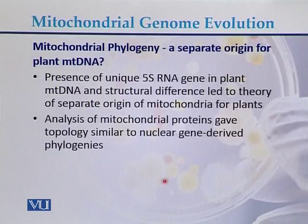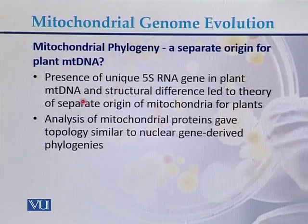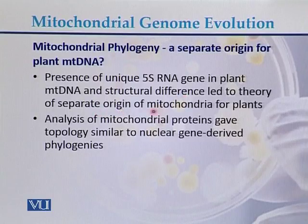Regarding mitochondrial phylogeny, there is a theory of separate origin for plant mitochondrial genomes. The presence of a unique 5S rRNA gene in plant mitochondria and structural differences led to the theory of a separate origin of mitochondria in plants.